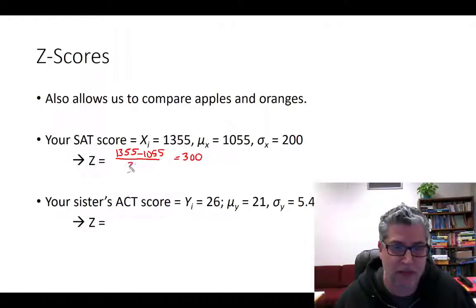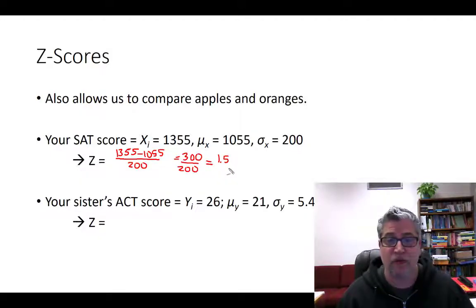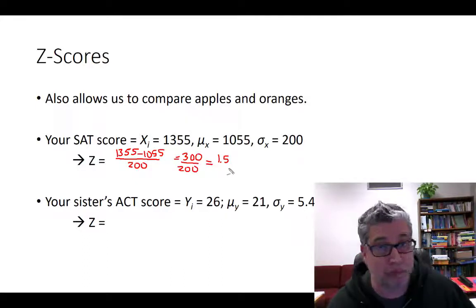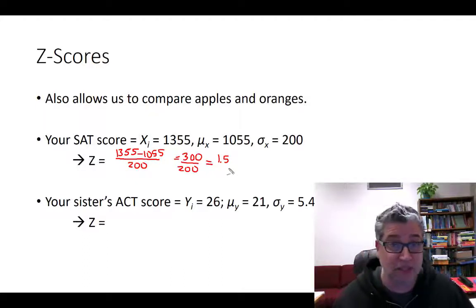Well, let's denominate by the standard deviation. So, 300 over 200 is like 3 over 2, which is 1.5. So, you did 1.5 standard deviations better than the average. That's a lot.